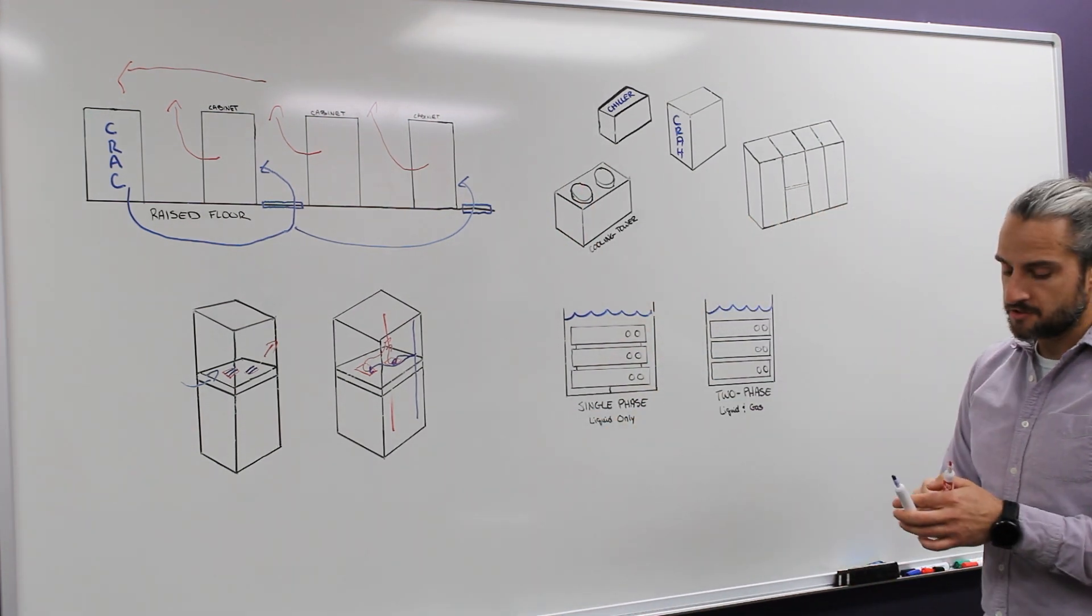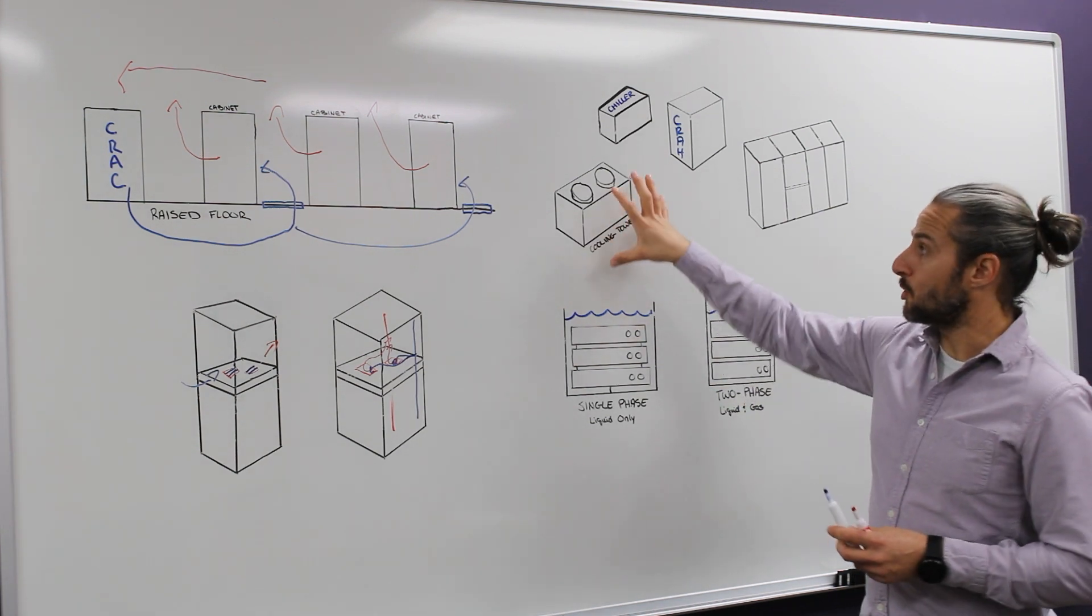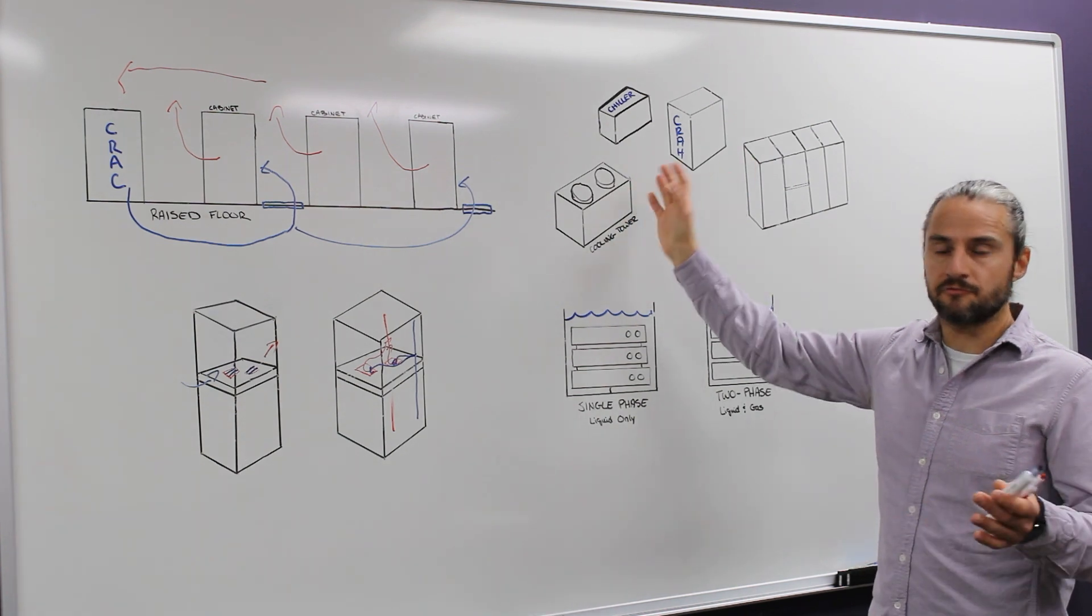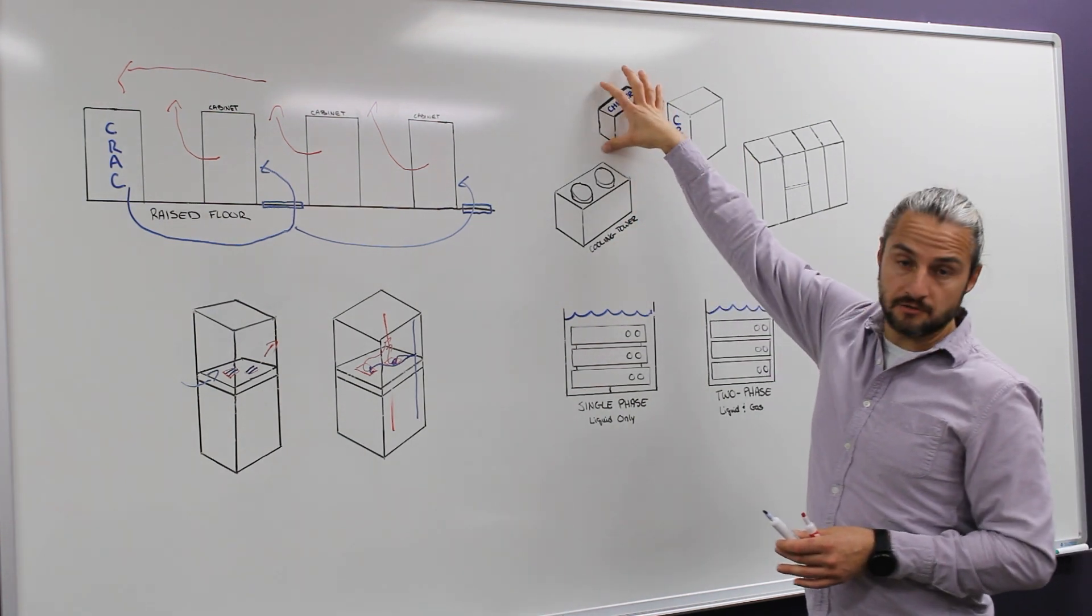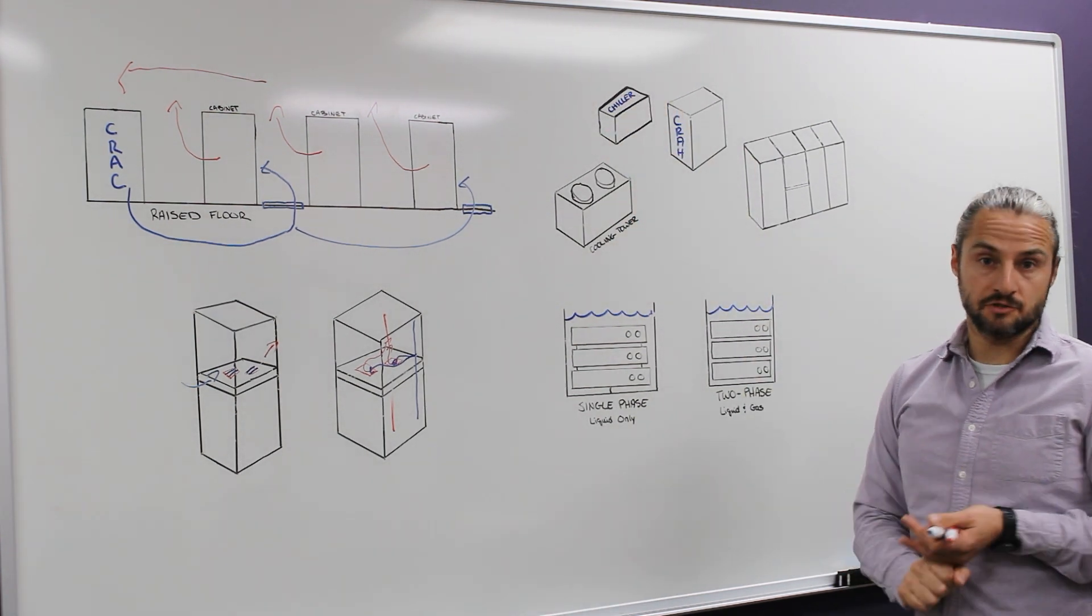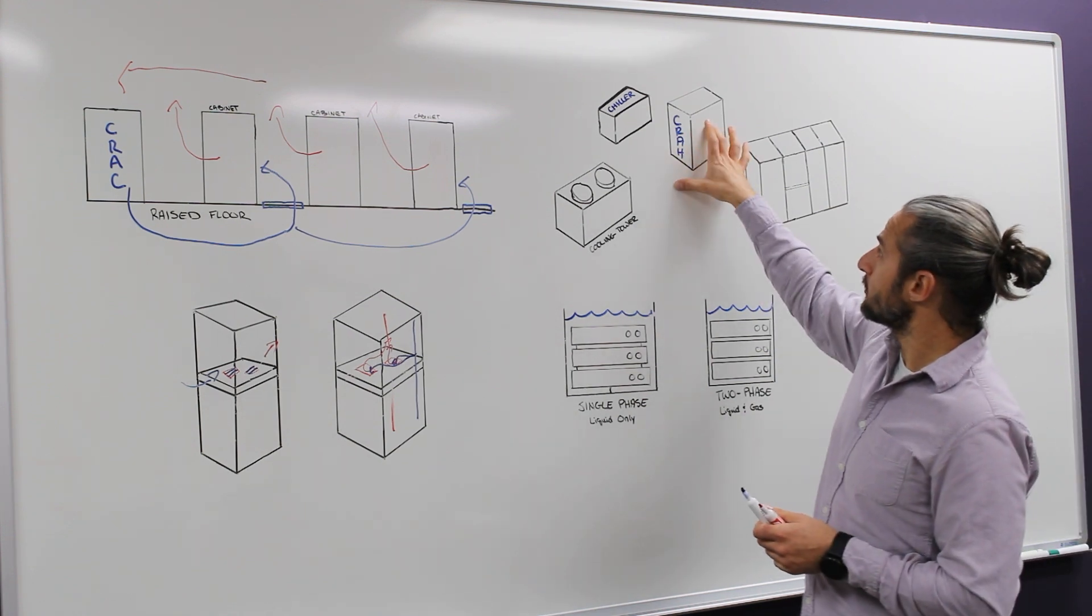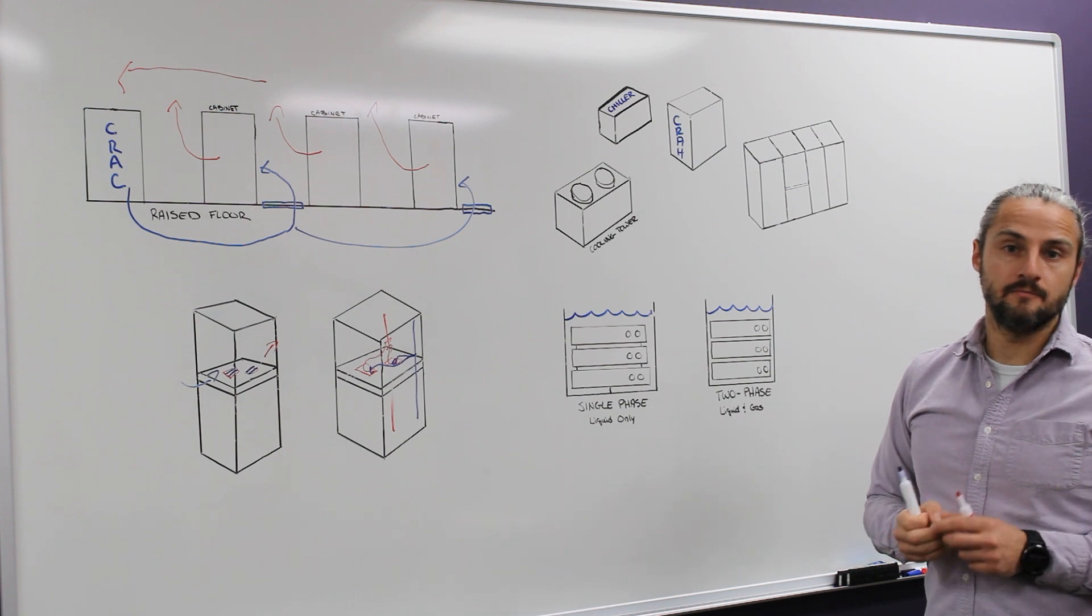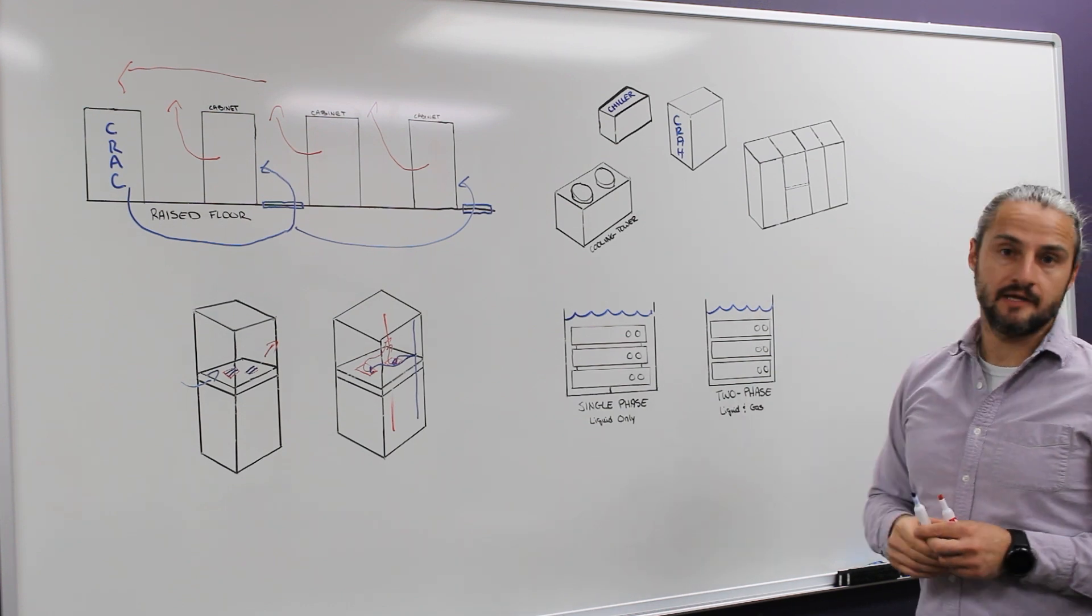What that looks like at a system level is you typically have a cooling tower or some means of dissipating the heat to the outside air on the roof or outside the building. There will be a chiller creating the facility chilled water and then if you're doing air cooling that chiller will serve a CRA unit, computer room air handler, or a CDU in the case of liquid cooling.